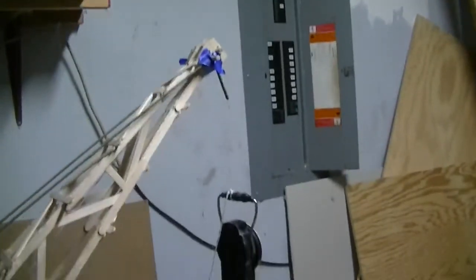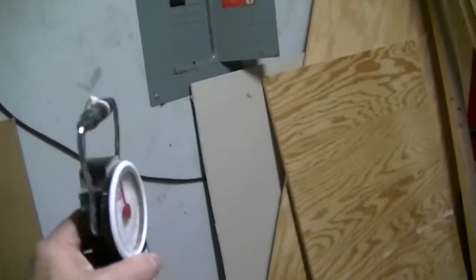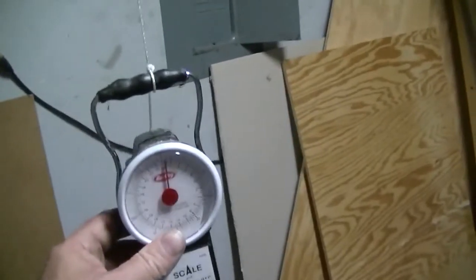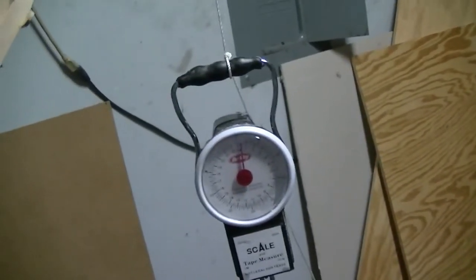And then, we have here, we have my infamous fish scale, it's a spring scale, it's designed to measure the weight of fish, and right now it's reading about a half a pound, and that's the weight of the bucket.